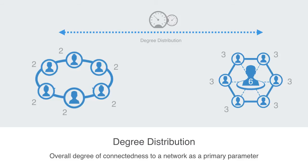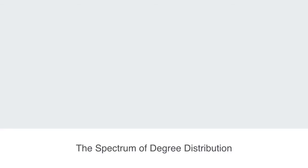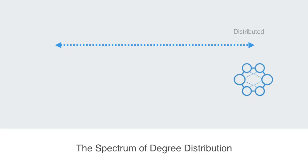Degree distribution is really asking the question: do all the nodes have roughly the same amount of connections, or do some have very many whilst others have very few? The different network models we'll be talking about in this module will lie on this spectrum of degree distribution, starting from systems with very homogeneous degree distributions — that is, all nodes having a relatively similar amount of connections. Here we'll be talking about random networks and distributed systems, where we have a relatively even topology to the network.